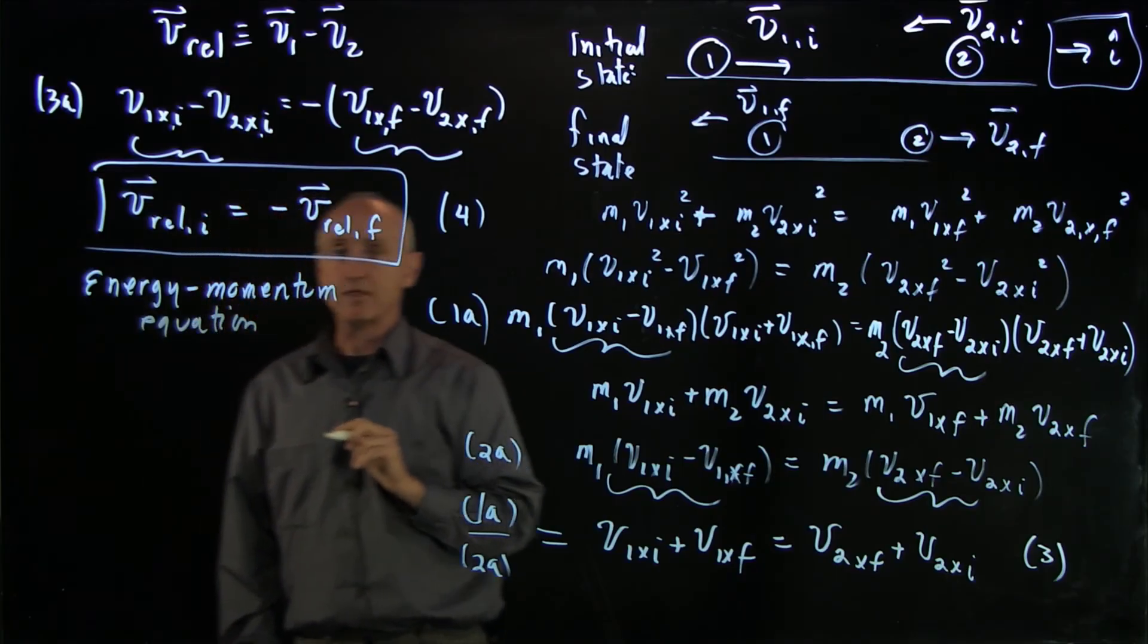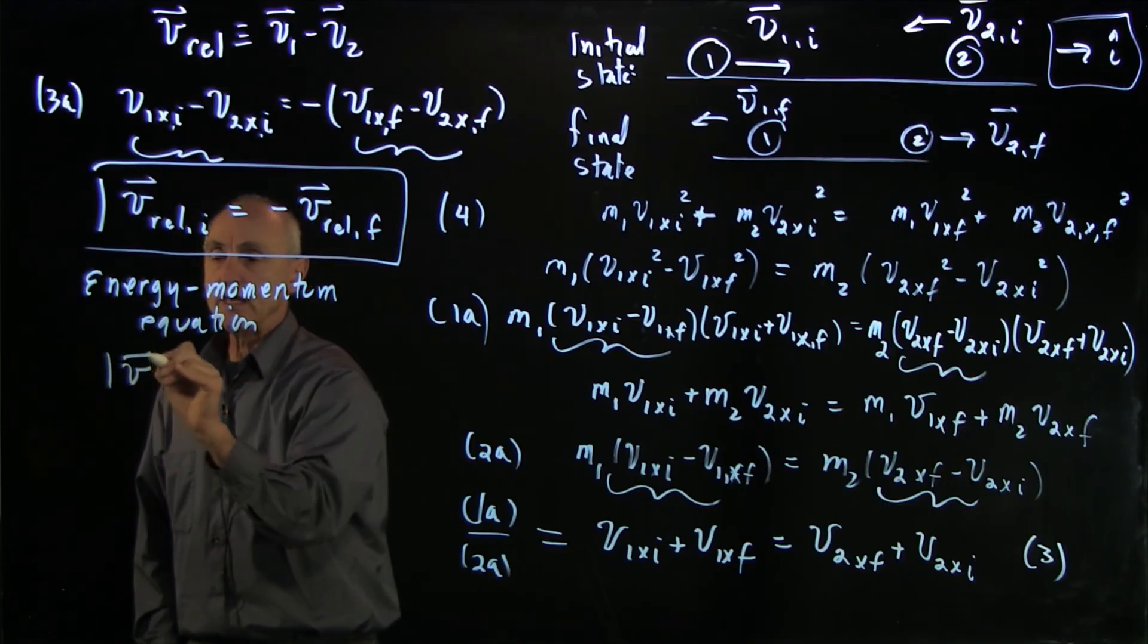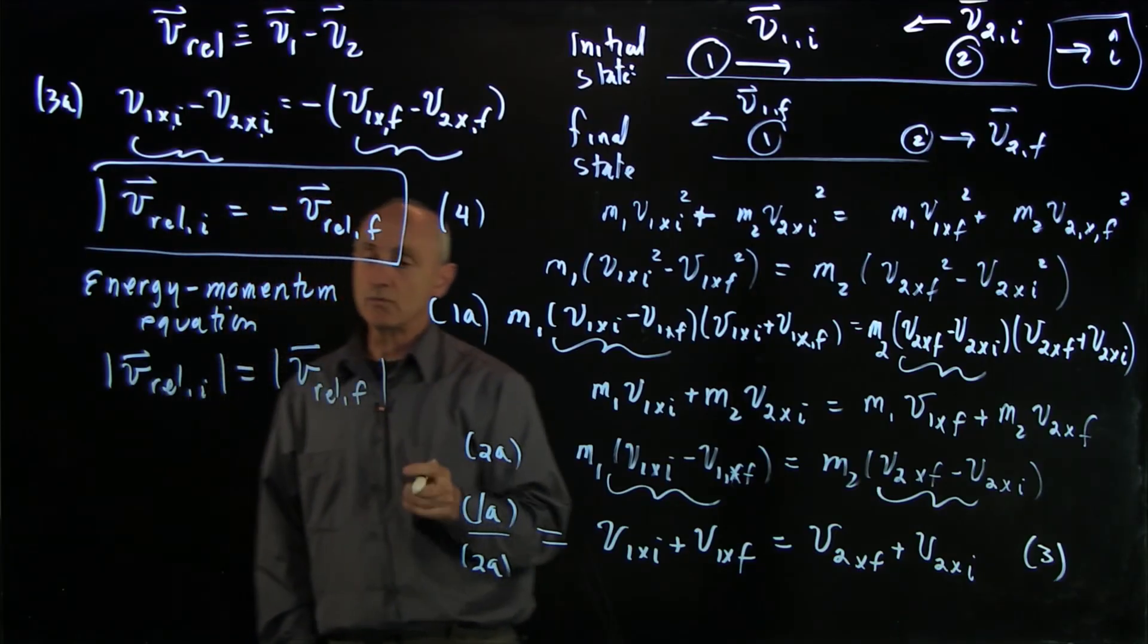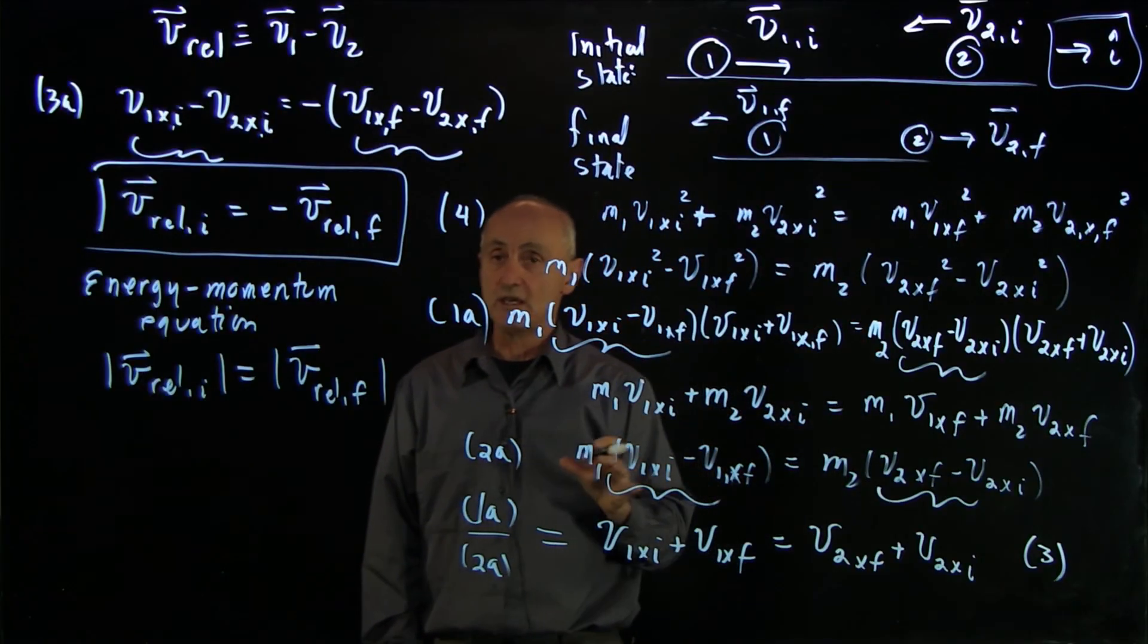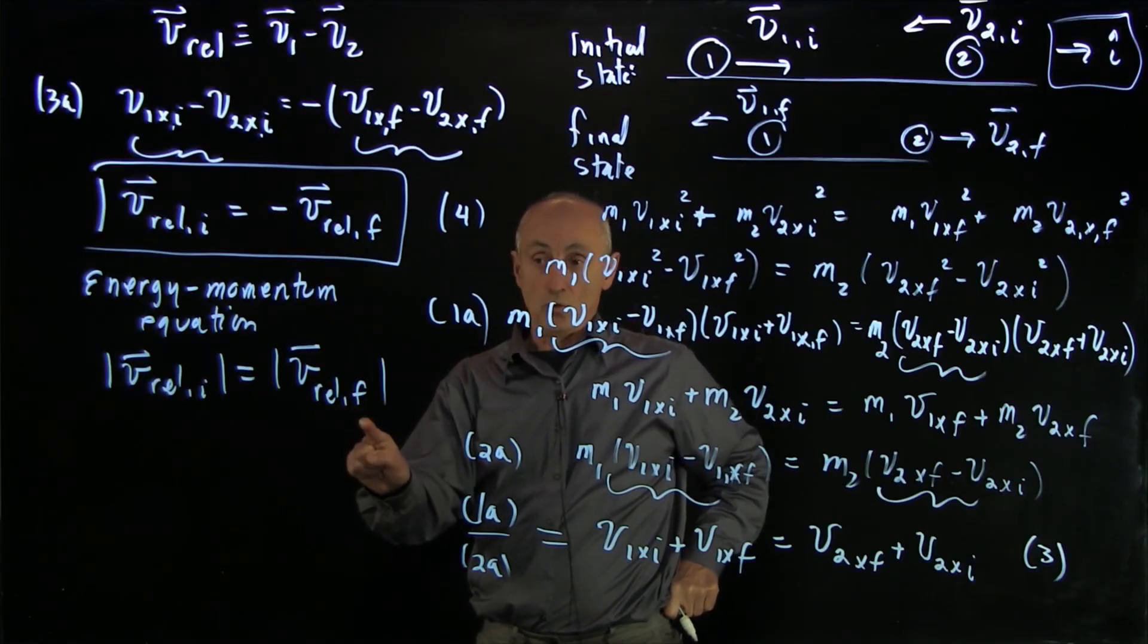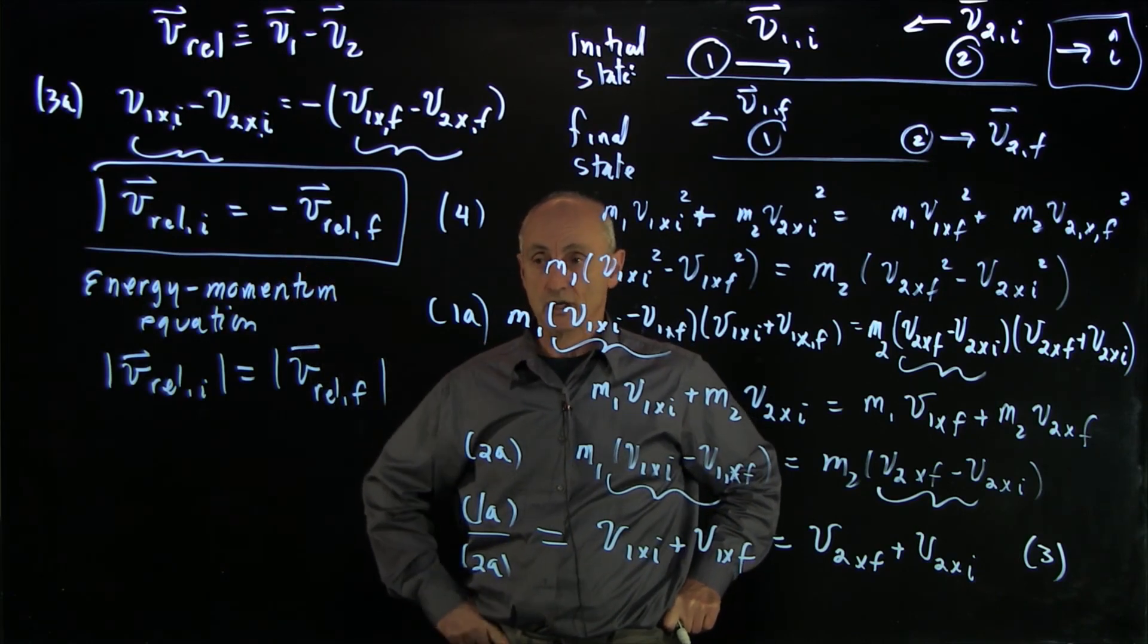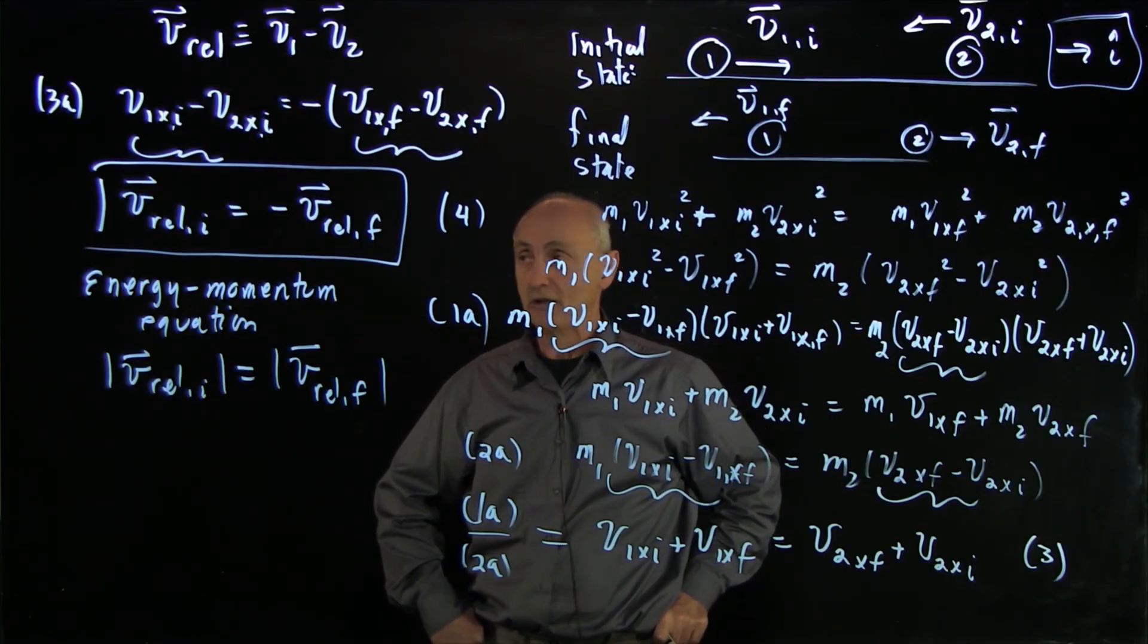Now there's a lot of significant things about this, so let's just think about it for a moment. We have that v relative initial in magnitude is equal to v relative final. And so right away this gives us some insight into any collision. We can see whether a collision, if we know what the relative initial velocity is, we know that the final relative velocity has the same magnitude but simply switches direction. And that's a powerful tool in which to analyze collisions without doing a lot of algebra.